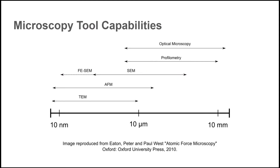Let's first orient AFM with other microscopy techniques. Depending on the lens, optical microscopes can resolve features perhaps as small as half a micron. Stylus-based profilers are limited by the size of the stylus, but typically resolve features in the 5 to 10 micron range. Thermal emission SEMs can resolve features down to approximately 100 nanometers, and field emission SEMs resolve down to 10 nanometers.